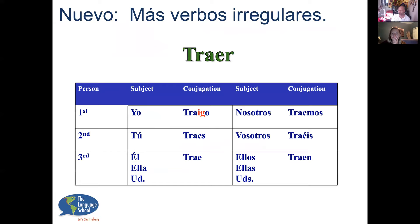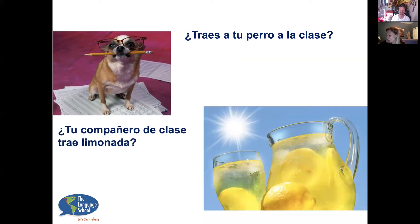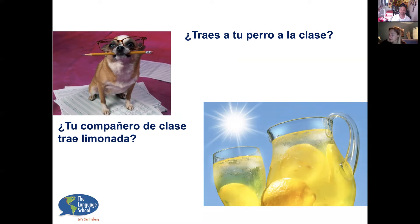Traer is irregular only in the first person: yo traigo. After that it's a regular ER verb: tú traes, él trae, ella trae, usted trae, nosotros traemos, ellos/ellas/ustedes traen. '¿Traes a tu perro a la clase?' 'No, no traigo a mi perro a la clase.' '¿Tu profesor trae limonada?' 'No, mi profesor no trae limonada.'